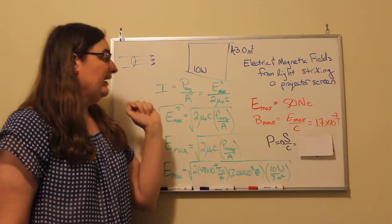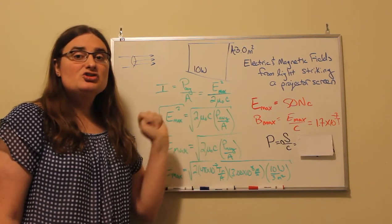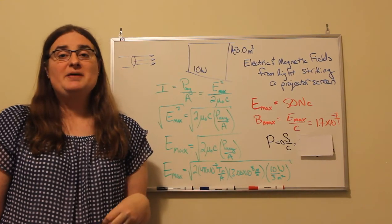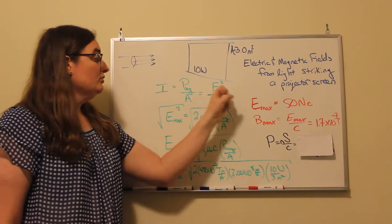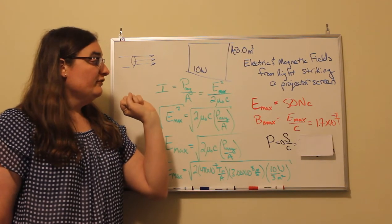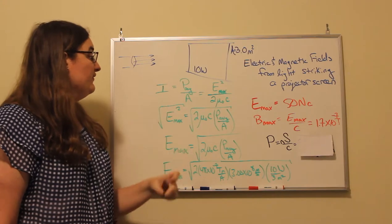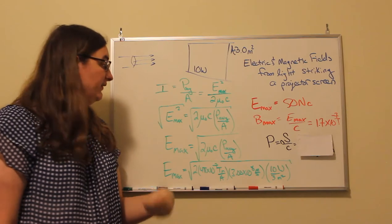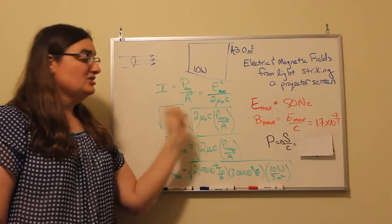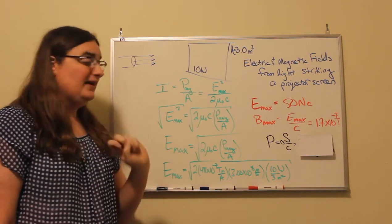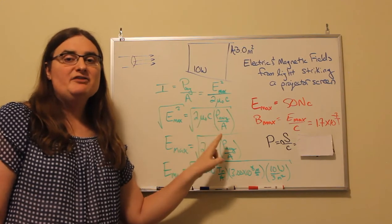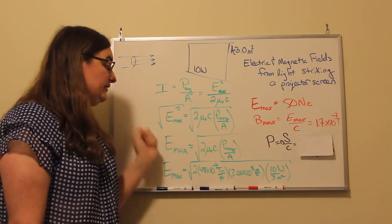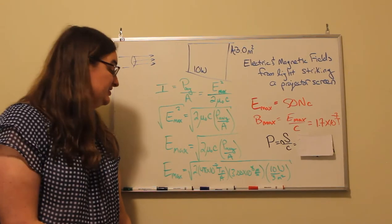Intensity also happens to be the square of the electric field divided by 2 times the permeability of free space and the speed of light. So the electric field amplitude, if I solve for that, I can multiply both sides by 2 times the permeability times the speed of light. So I'd have 2 times the permeability times the speed of light times my intensity, which is my average power per area, is the electric field squared, or the electric field is the square root of what I just said.